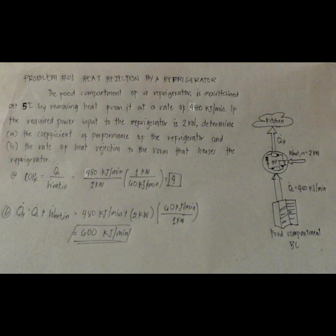We have 4. That is, 4 kilojoules of heat is removed from the refrigerated space for each kilojoule of work supplied.